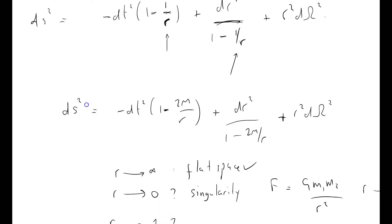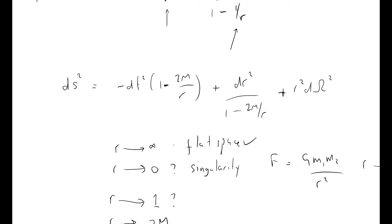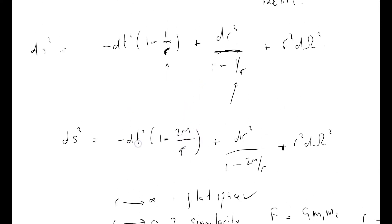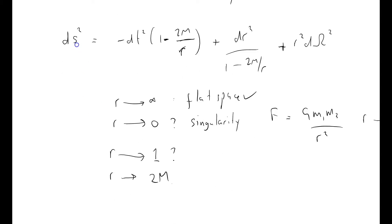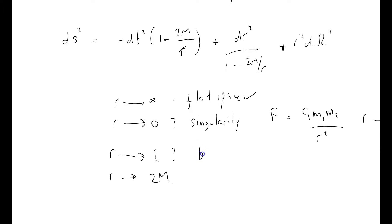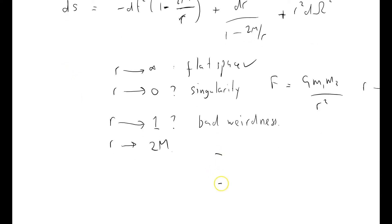What happens, or I guess r approaches 2m, if you want to consider in this system here? Well, we've got something rather peculiar going on, because the coefficient of t squared becomes equal to zero, and the coefficient of dr squared, this thing is, we're dividing by something that's approaching zero. So when r approaches 1, we've got bad weirdness. But we're not quite sure what that bad weirdness is.